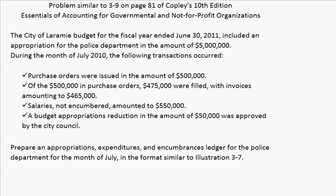First of all, we want to take a look at the problem and see what it's asking for. The City of Laramie budget for the fiscal year ended June 30, 2011, included an appropriation for the police department in the amount of $5 million. During the month of July 2010, the following transactions occurred: purchase orders were issued in the amount of $500,000. Of the $500,000 in purchase orders, $475,000 were filled with invoices amounting to $465,000.